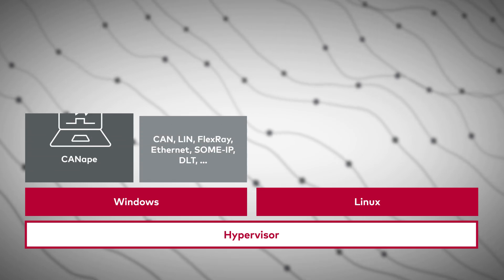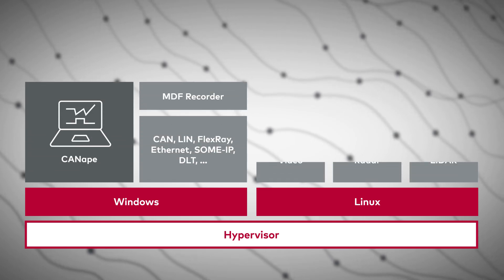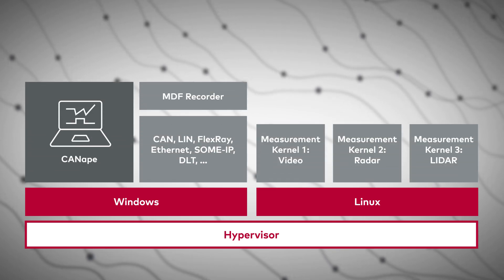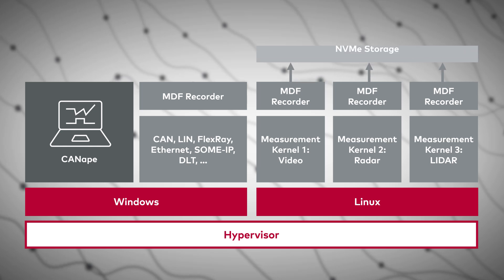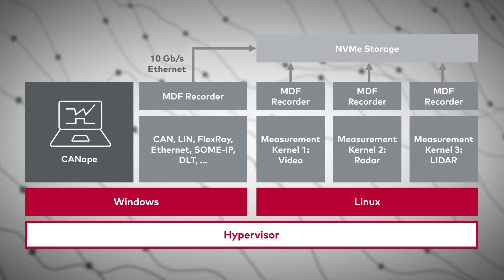Canopy runs as usual on Windows, while dedicated measurement kernels — which are specially designed for high data rates — can run on Linux. The entire configuration, measurement and visualization are handled by Canopy. The hypervisor solution allows you to log up to 5 GB per second on a single VP platform.